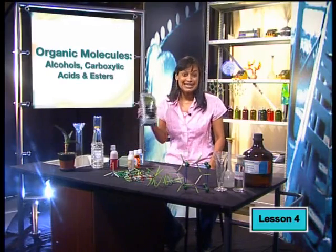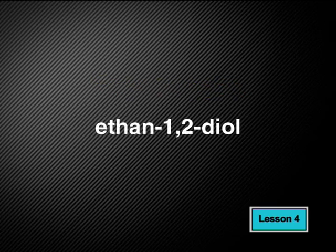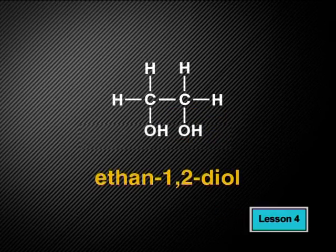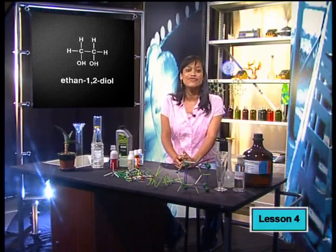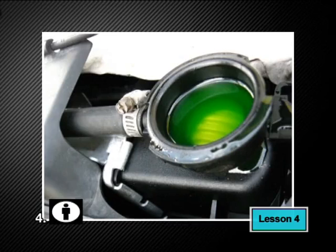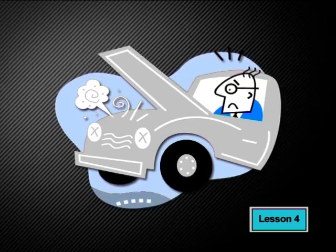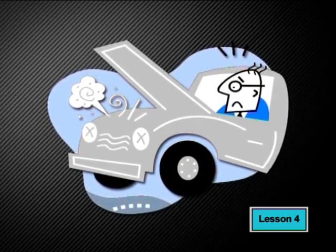Now try to draw the molecule in this motor car antifreeze. The main ingredient is called ethylene glycol, but its IUPAC name is ethan-1,2-diol. Remember that 'di' means two of the same thing — the numbers indicate their position. The backbone molecule is ethane and two hydroxyl groups occur on carbons number one and two. Ethan-1,2-diol is very useful as an antifreeze. When mixed with water, it protects the engine of a car in cold weather by keeping the water inside the engine in liquid form, by lowering the freezing point of the water inside. So when it's below freezing point in winter, the water in the engine can still flow.